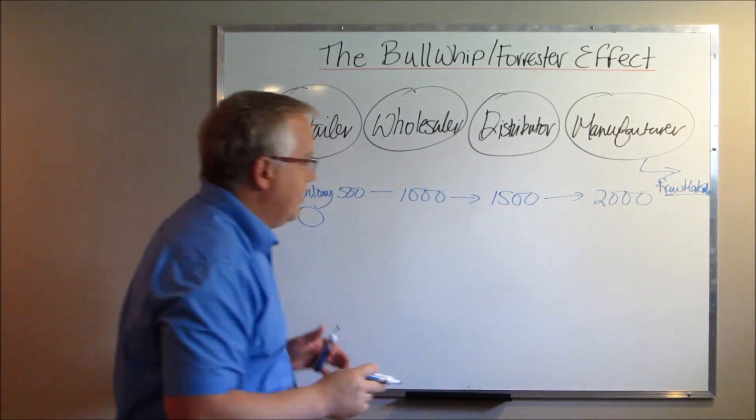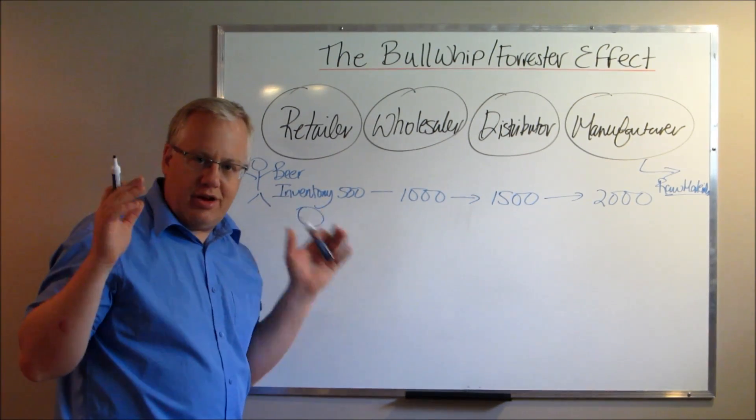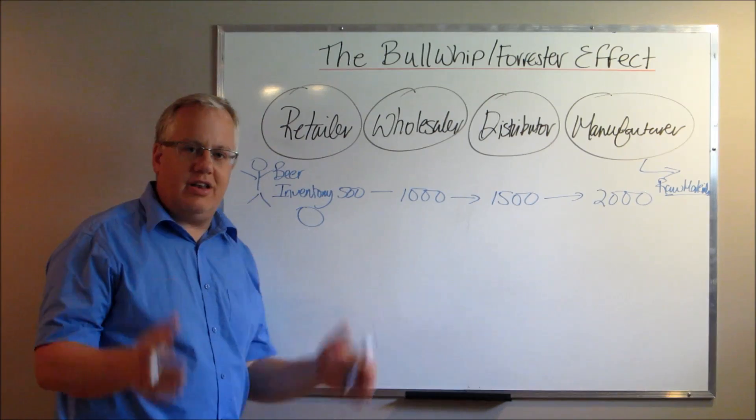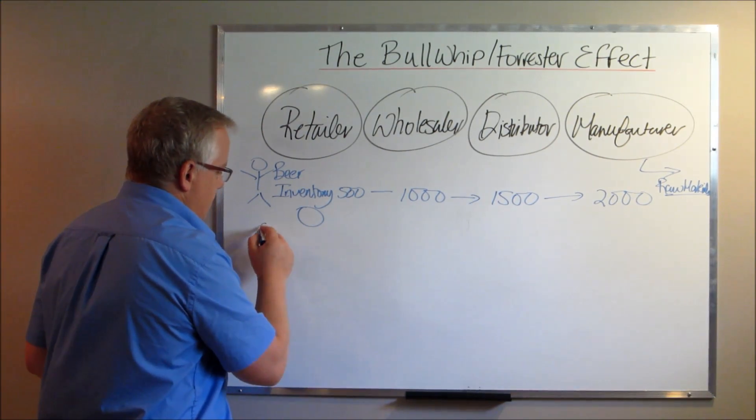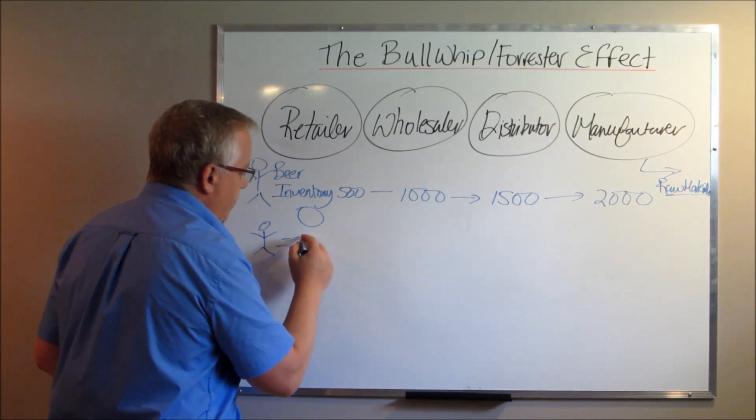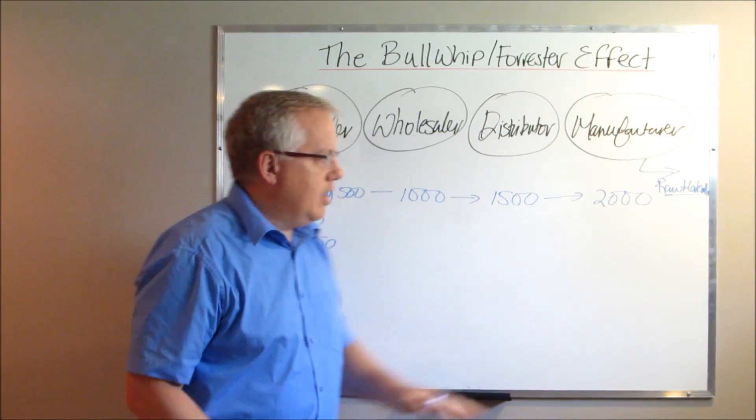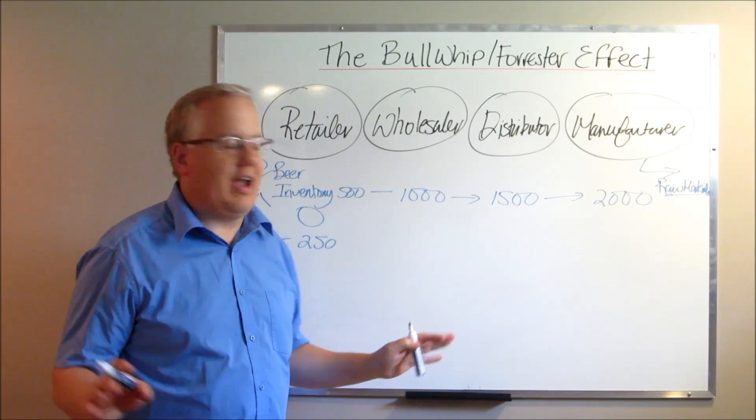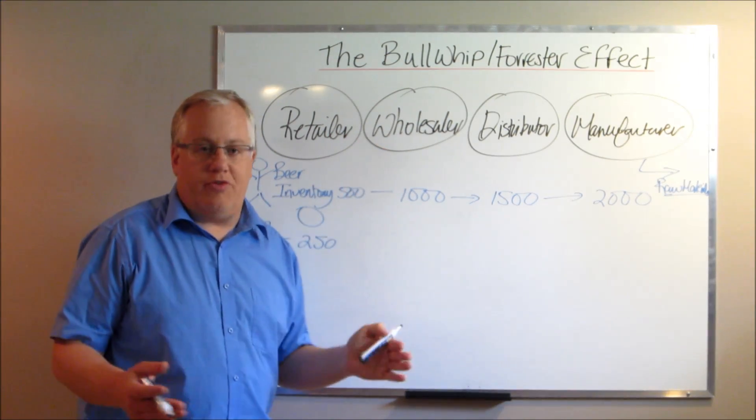Now what happens is this all looks fantastic. It looks great. All of a sudden, there's this increased demand. It's phenomenal. It's going to continue. The next month, as I said, the consumers come in and their order volume is 250. And it puts all of this out the window. It's completely out of whack. Everybody's inventory is higher than it was before.